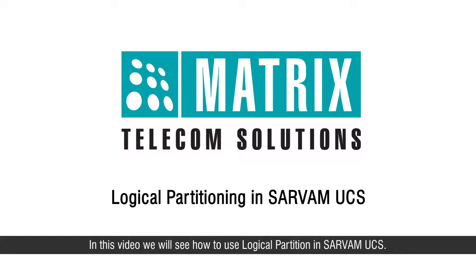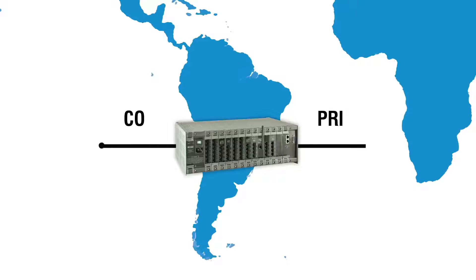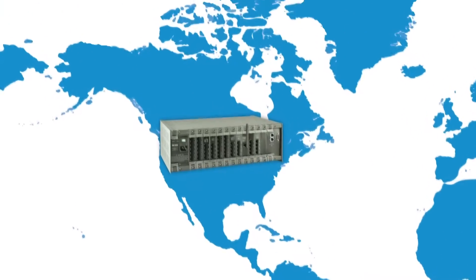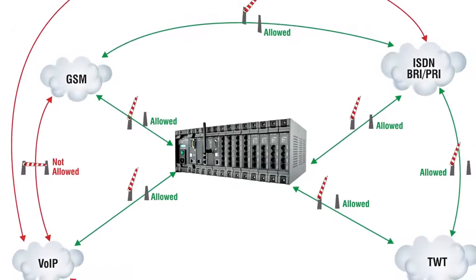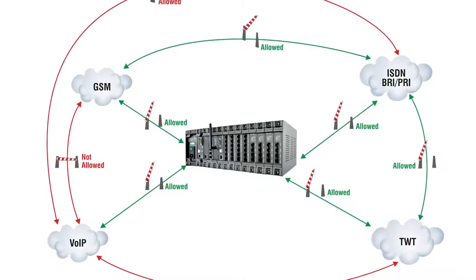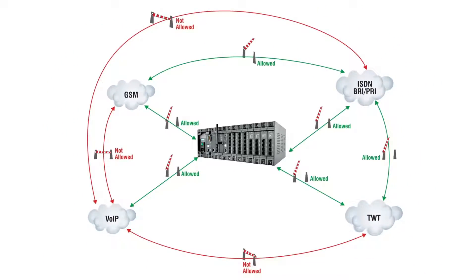In this video, we will see how to use logical partition in Servum UCS. Telecom regulations vary from country to country. Routing calls between different telecom networks are allowed in some countries while barred in others. To deal with such scenarios and to free users from the legalities of network usage, Servum UCS is equipped with a feature called logical partition. This feature helps users route calls through legally permissible networks only.